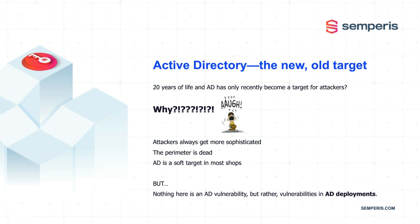Because Active Directory comes from a pedigree of being behind four walls, the threats you thought about were not typically the ones you protected against in AD. Its design doesn't expect threats from the outside, making it a soft target. Nothing we'll talk about is really a vulnerability in AD as an exploit of poorly written code — rather, these are vulnerabilities in the way AD is deployed in customer environments. The good news is that from a defensive perspective, we actually have the ability to make changes to protect ourselves. With that, I'll pass it over to Andy.